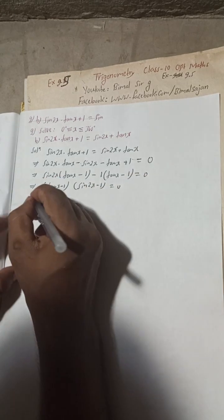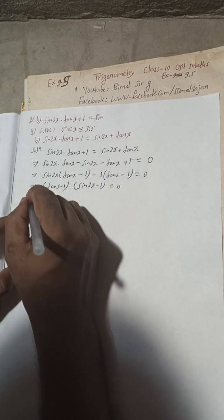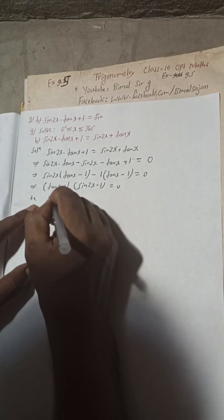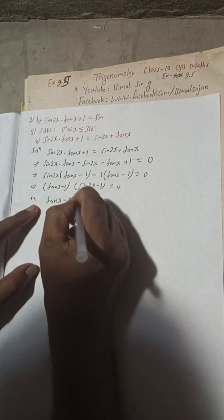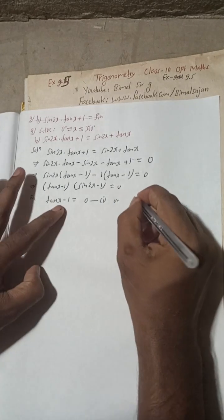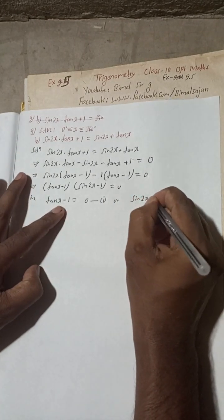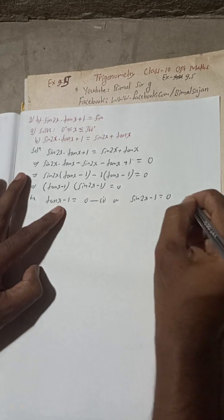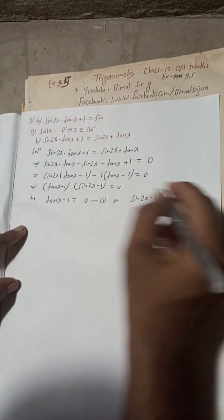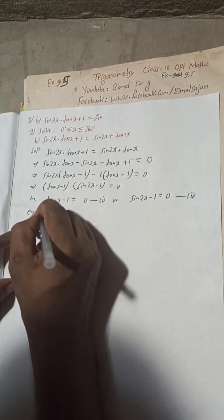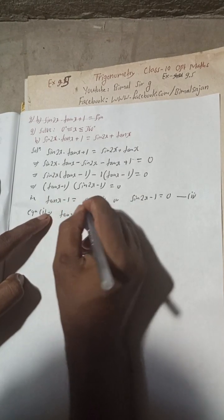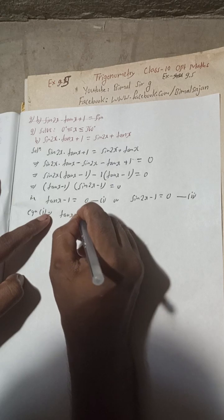This means either tanx − 1 = 0 (Equation 1) or sin2x − 1 = 0 (Equation 2). Now Equation 1 implies tanx = 1.